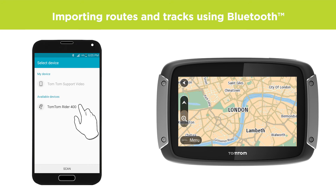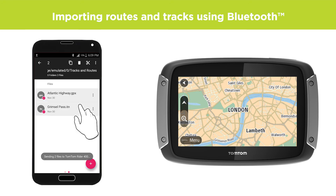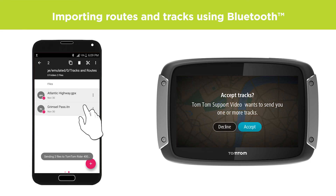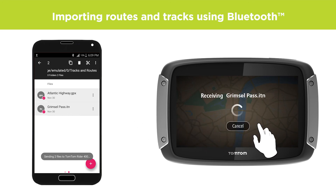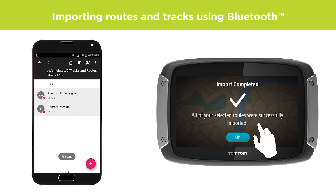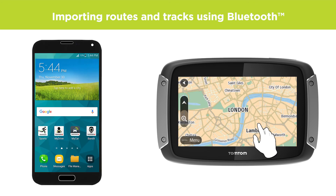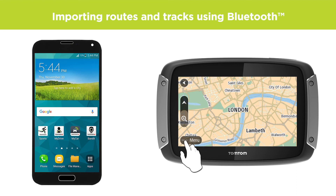Select your rider from the list of available devices, and then accept the transfer on your rider. Once the tracks and routes have been received and imported, you can find them on your rider under My Routes.